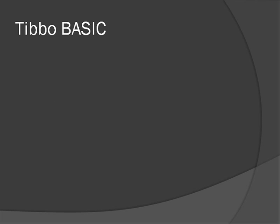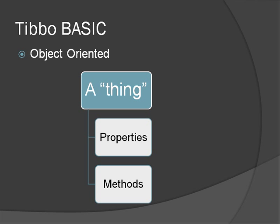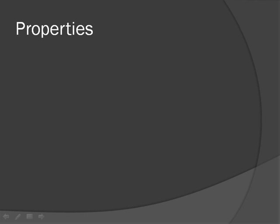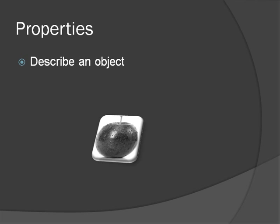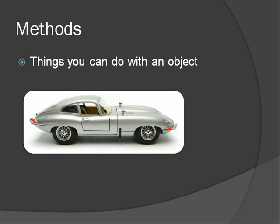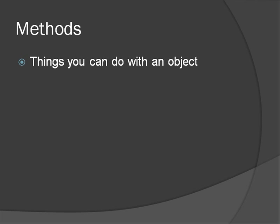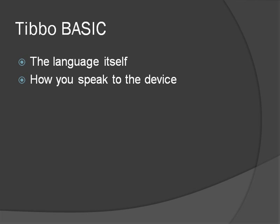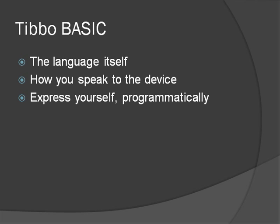TiVoBasic is object-oriented, which means that every part of the device — such as the memory or the network interface — is actually a thing, an object. Each object has properties and methods. Properties describe an object: if I have an apple, I can have a size property and a color property. Methods are things you can do with an object — so a car object would have a go method. TiVoBasic is the language itself, how you speak to the device and how you express yourself programmatically. One of the main design objectives when creating TiVoBasic was to make it easy to get started.